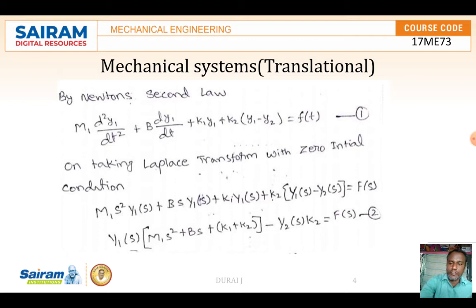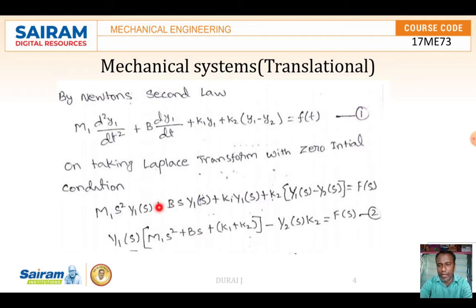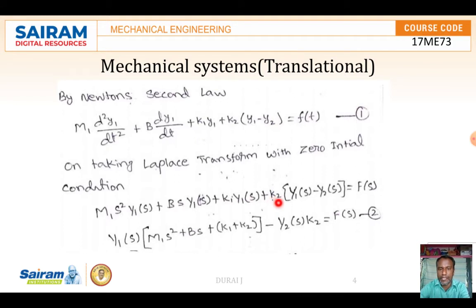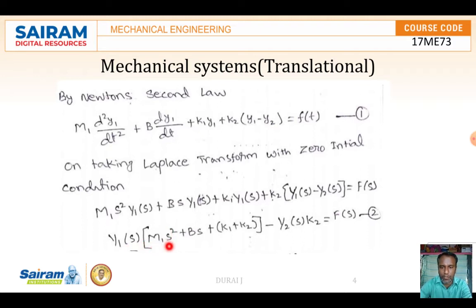Taking the Laplace transform with zero initial conditions to convert the time domain to the frequency domain, the equation becomes: M1·s²·Y1(s) + B·s·Y1(s) + K1·Y1(s) + K2·(Y1(s) - Y2(s)) = F(s). Grouping Y1(s) terms: Y1(s)·(M1·s² + B·s + K1 + K2) - K2·Y2(s) = F(s).